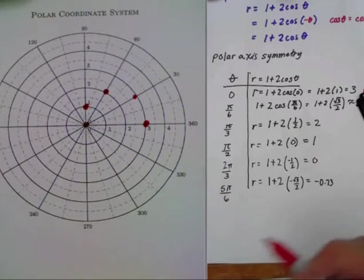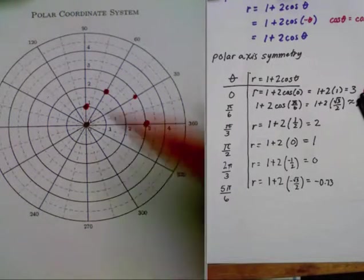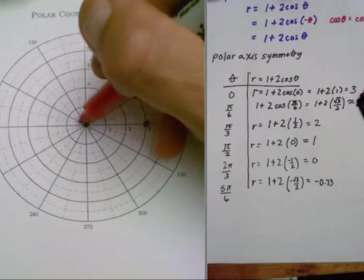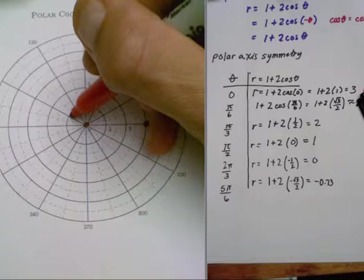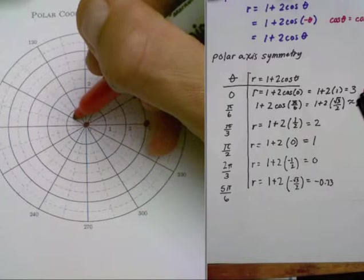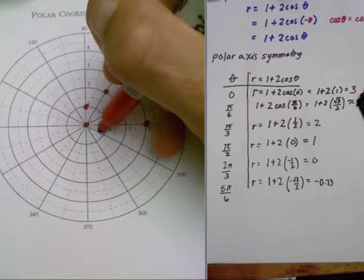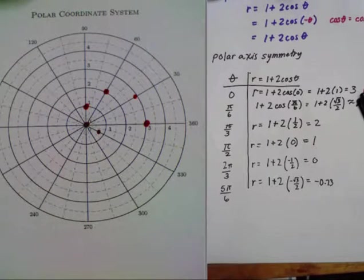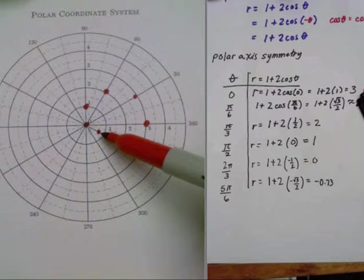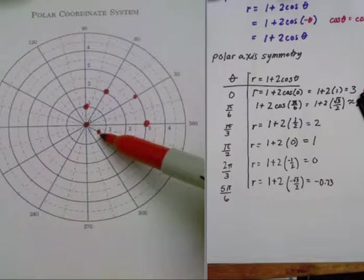So now if we go out to five pi over six, there it is right here. Here is one, but we have to go negative, so we go back to about here. There is negative 0.73 at five pi over six.